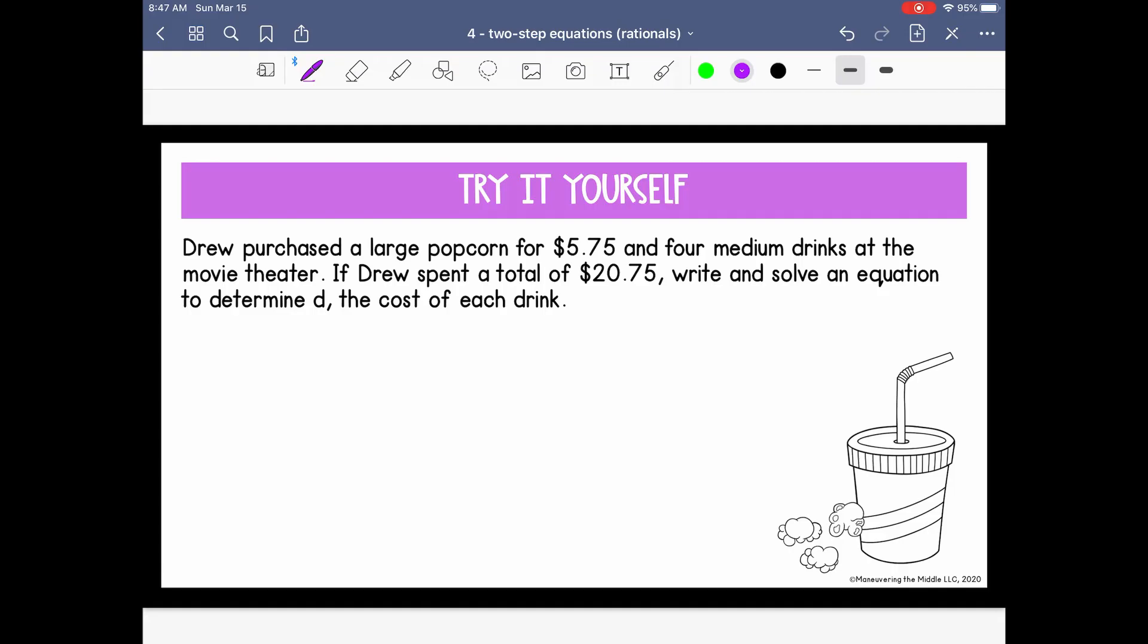Drew purchased a large popcorn for $5.75 and four medium drinks at the movie theater. If Drew spent a total of $20.75, write and solve an equation to find D, the cost of each drink. So again, make sure you define your variable. What we're looking for is the cost of a drink. Okay, we know that Drew bought a large popcorn for $5.75, so let's start there, and four medium drinks. So that's going to add to his cost. And how would I show four medium drinks? Well, if I know that D represents one drink, let's just give it the coefficient four. Multiply it by four. So he bought popcorn and four drinks, and he spent a total of $20.75. So here's our equation.